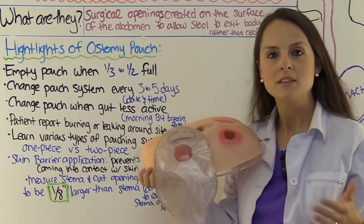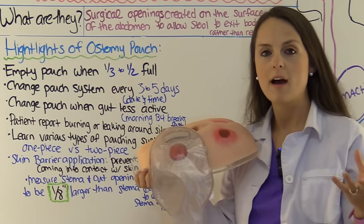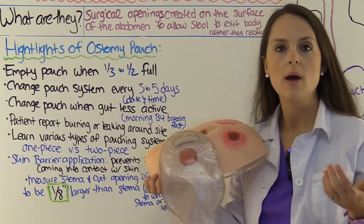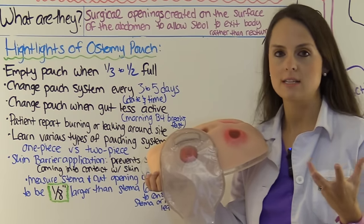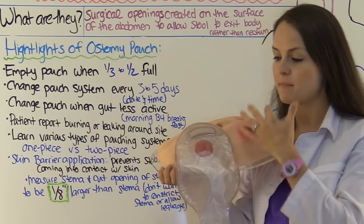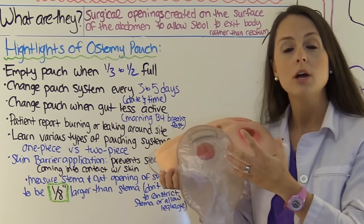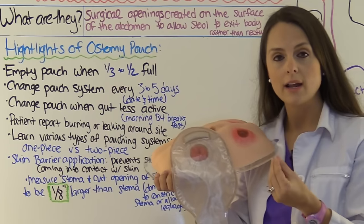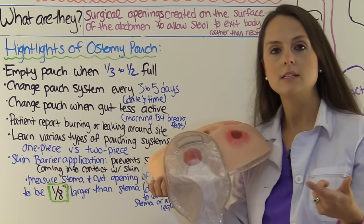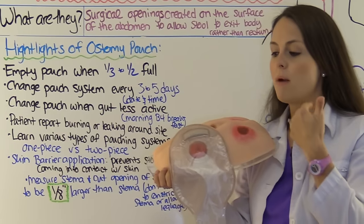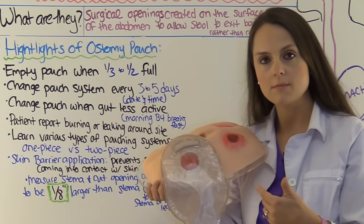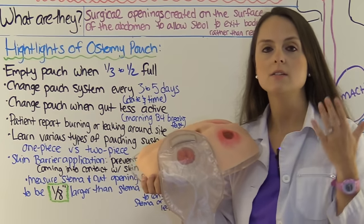A good pouching system with a good skin barrier will really help prevent skin breakdown. Always when inspecting and assessing as a nurse, look around the skin and make sure it does not look excoriated. One of the big things you need to know about post-op care is the pouching system. The pouch placed over the ostomy collects the stool that drains from it. As the nurse, you need to teach the patient how often to empty the bag, when to change the system out, and how to change it.